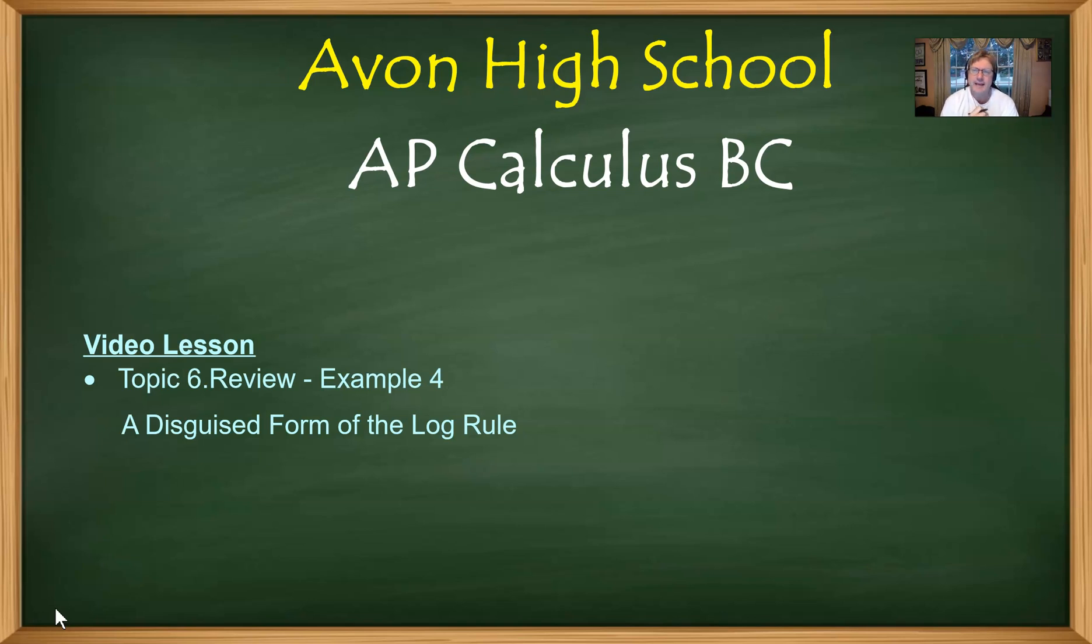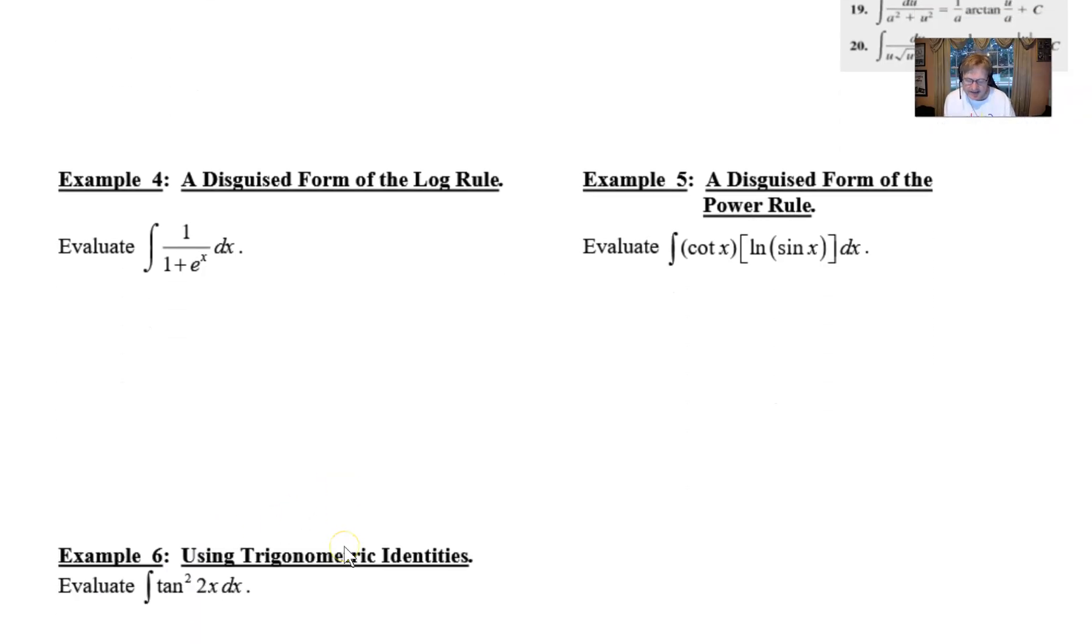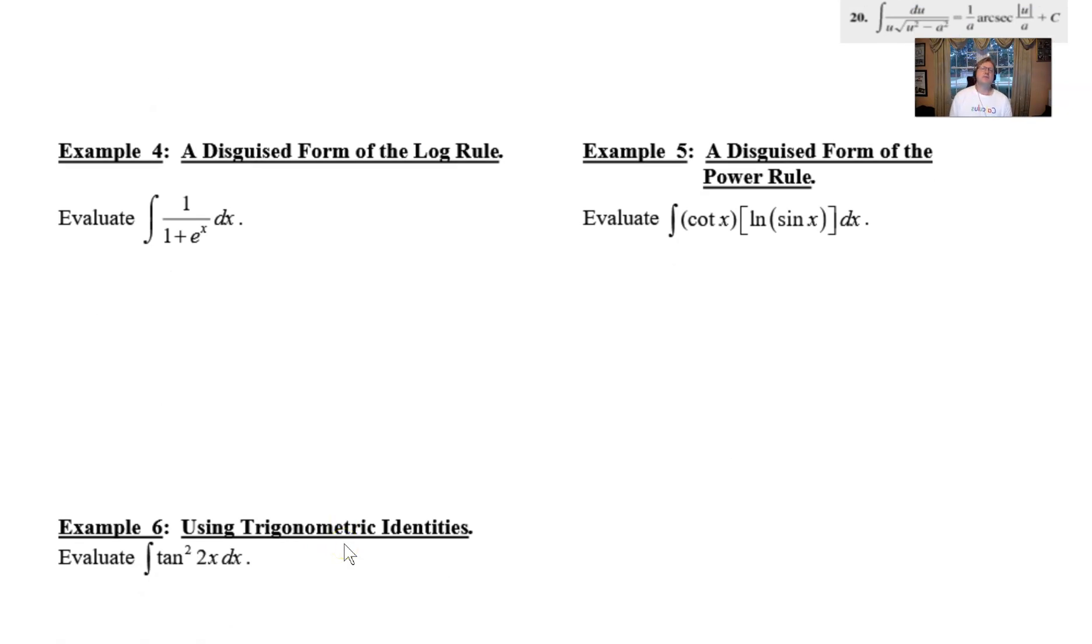You might think of it more as a very underhanded trick that can be used with integration, but it does involve this log rule. If you've forgotten, the log rule is just simply whenever you integrate a one over u form that produces the natural log of the absolute value of u. Now we're going to see that in our example but it's also going to have a little twist to it. So if we move on to example four you'll notice that the integration problem is set up so that we're integrating one over one plus e to the x.